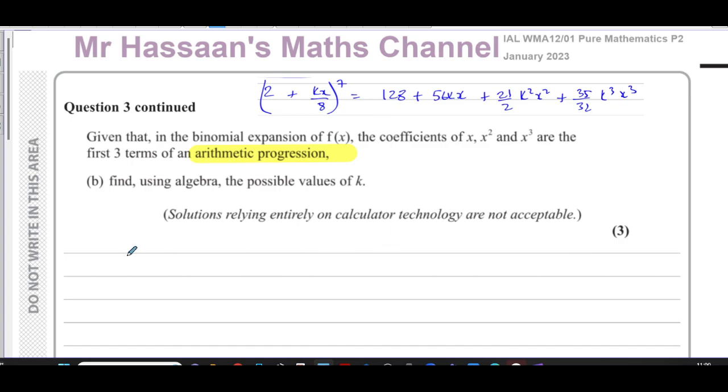That means the x term, which is 56k, and the next term, which is 21 over 2k squared, and the next term, the coefficient of x squared, the coefficient of x cubed is 35 over 32k cubed. These three terms are in arithmetic progression.